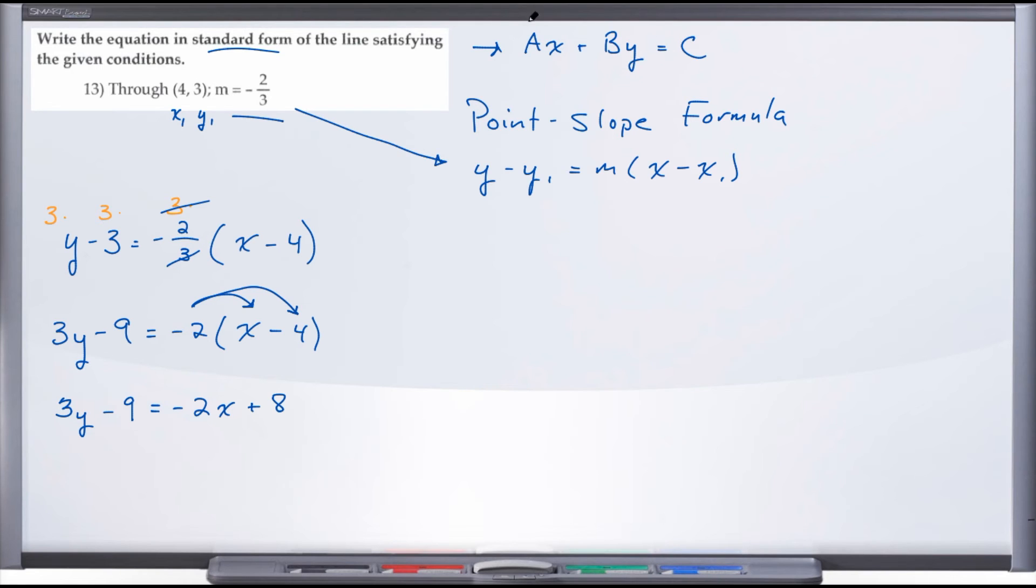If we want to put this equation into standard form (Ax + By = C), that means I want my x and my y on one side and the constant—the number without a variable—on the other. I have my y on the left, so I'm good there, but my x is on the right-hand side. So let's go ahead and move this x over by adding 2x to both sides. When we do that, I'm going to go ahead and go over here to give us some more room. We're going to end up with now 2x + 3y - 9 = 8.